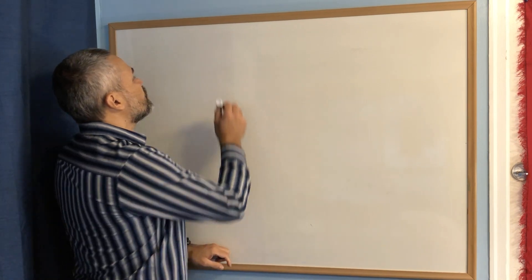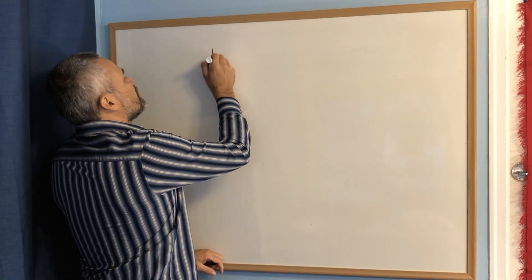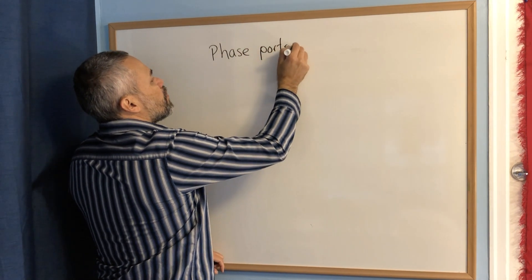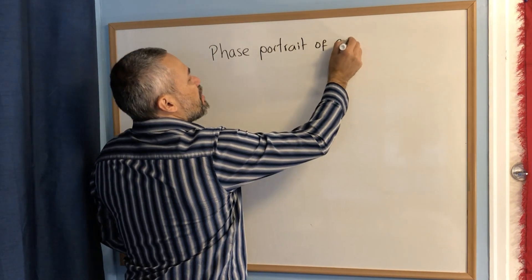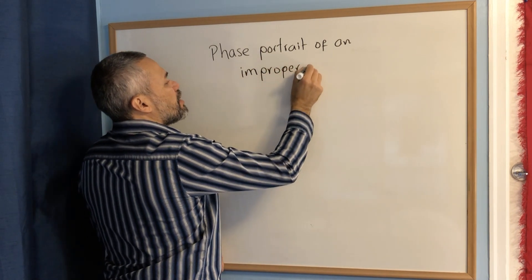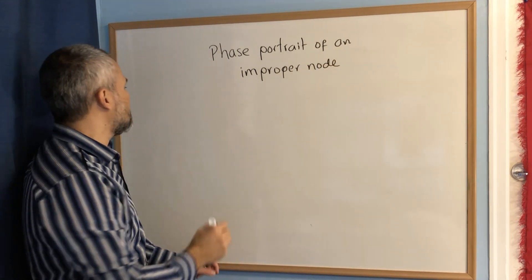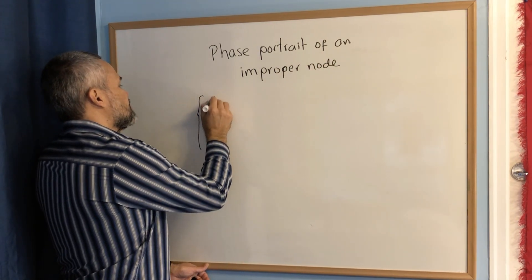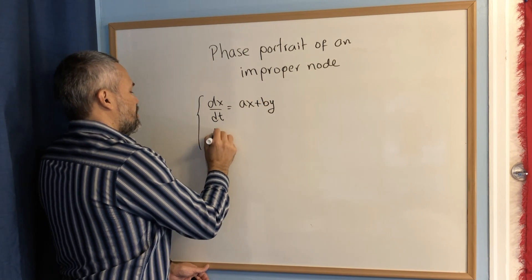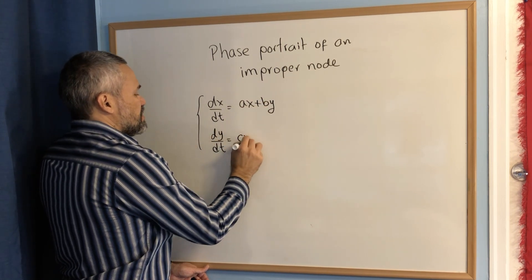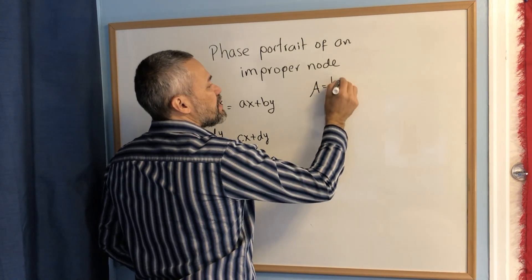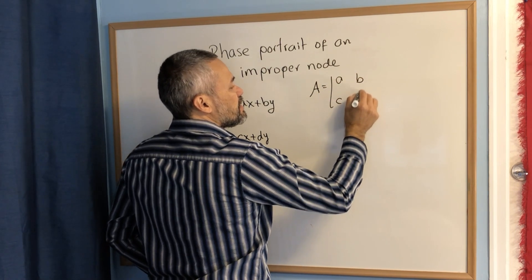In this video I will explain how to do the phase portrait of an improper node. We are considering a linear system: dx/dt = ax + by, dy/dt = cx + dy. The matrix of the system is the matrix [a, b; c, d].